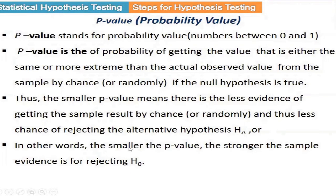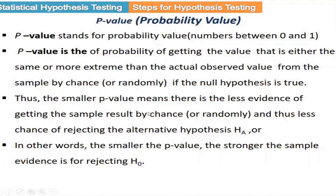A smaller p-value means we are not getting the result by chance. We did not get our result mistakenly — very small chance we calculated our value randomly. So we are going to reject the null hypothesis and accept the alternative hypothesis. Less p-value means our test value is more accurate; we have to go for the alternative hypothesis.